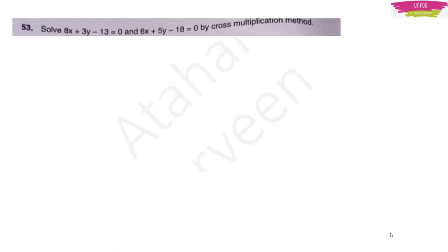Now let us start with our 2-mark questions. In Part 1 we discussed questions 51 and 52. From question number 53, all questions will be descriptive. I am solving maths, physics, chemistry, and biology — all questions from the GPSTR 2022 mathematics and science question paper. The first question is: solve 8x + 3y − 13 = 0 and 6x + 5y − 18 = 0 by the cross multiplication method.